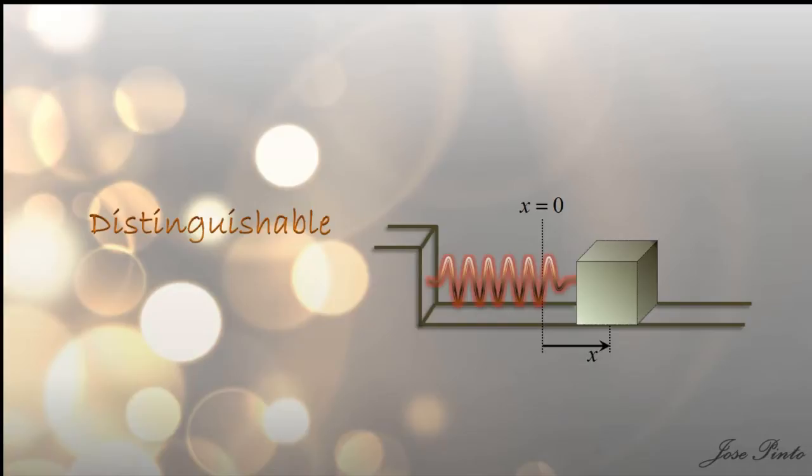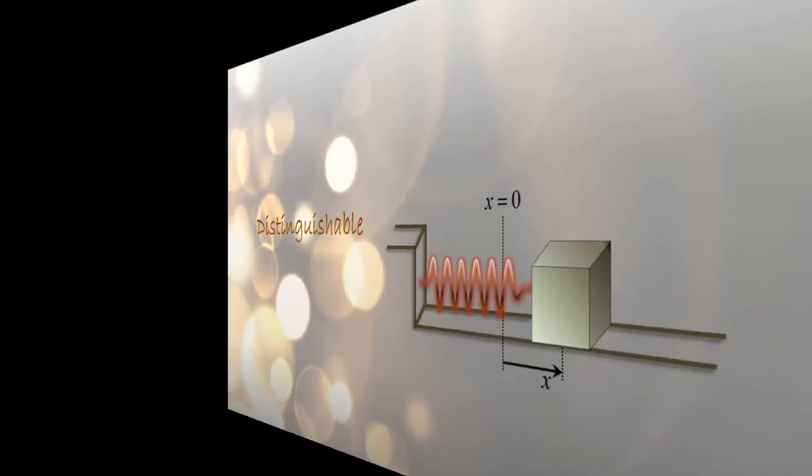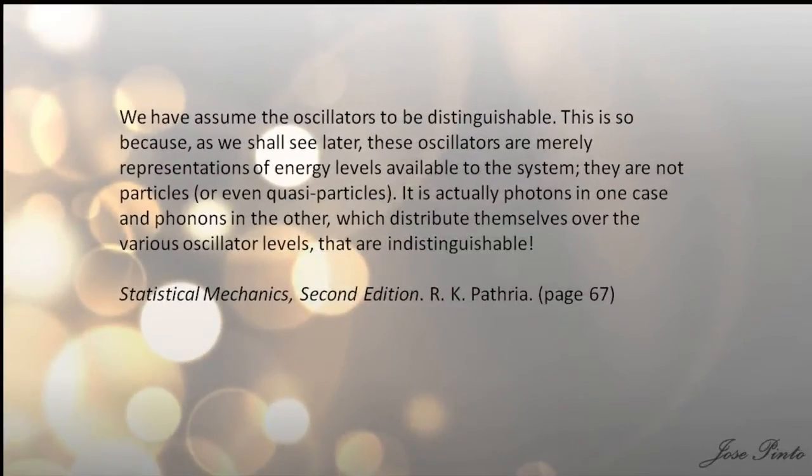This is what we see in books and in class. A lot of us take it for granted, and we don't really know what actually makes a system distinguishable. Many people will say exactly the same things that they just read in books. That the oscillators are distinguishable because they are representations of energy levels available to the system. They are not particles or even quasi-particles. They are phonons or photons which distribute themselves over various oscillator levels.